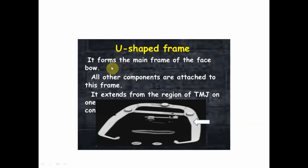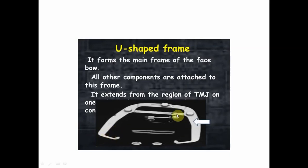This is the U-shaped frame — it forms the main frame of the facebow, and all other components are attached to this frame. The distance spans from the TMJ on one side of the face to the temporomandibular joint on the opposite side. The horizontal rod should be 3 to 5 millimeters in front of the frontal plane of the face in order to avoid contact with the face.